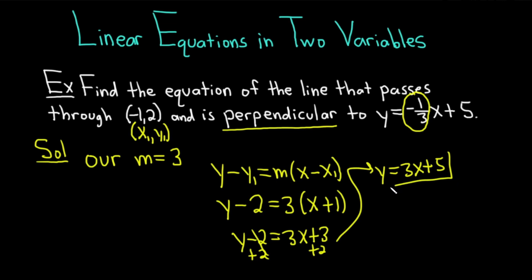Pretty cool. So this line would be perpendicular to the line given in the problem and it passes through (-1, 2).